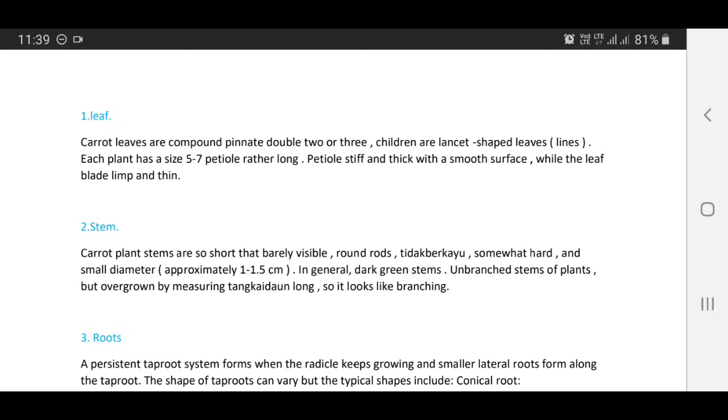Now we discuss the stem. Carrot plant stems are short but barely visible, round, thick, woody, somewhat hard and small diameter, approximately 1 to 1.5 cm. In general, dark green stems, unbranched stems of plants, but overgrown by measuring long, so it looks like branching.